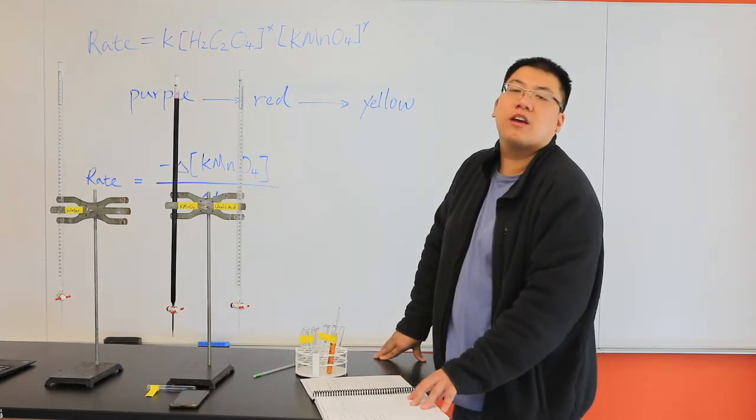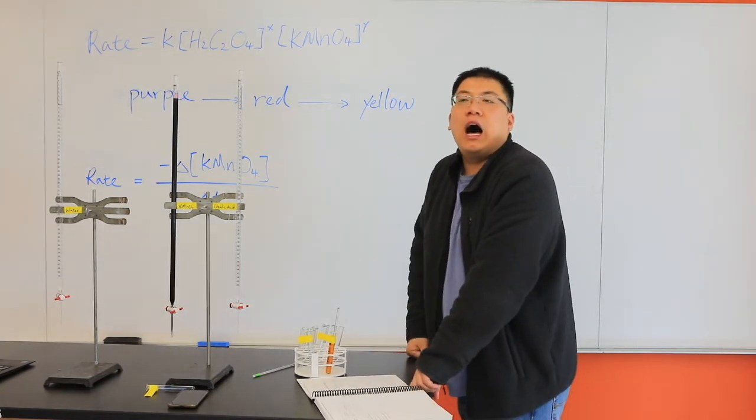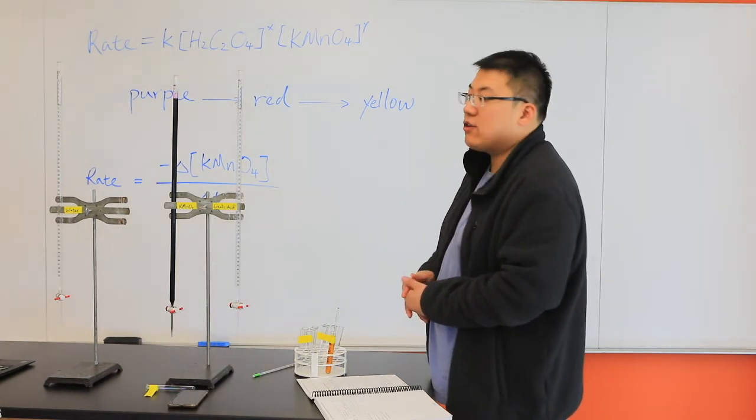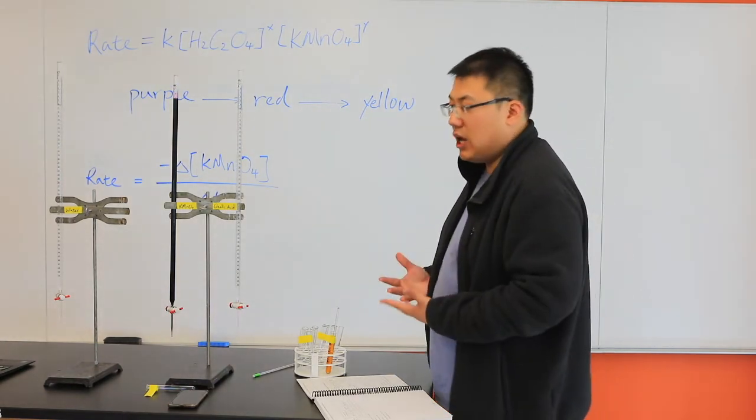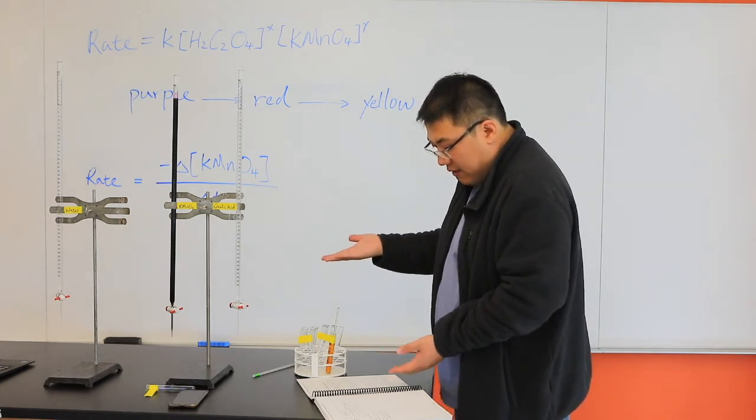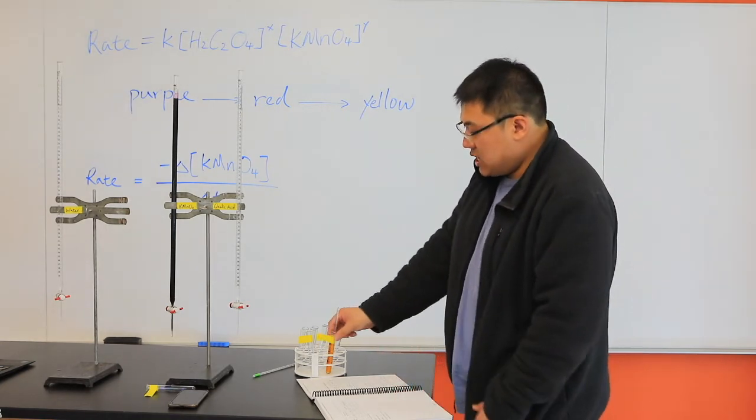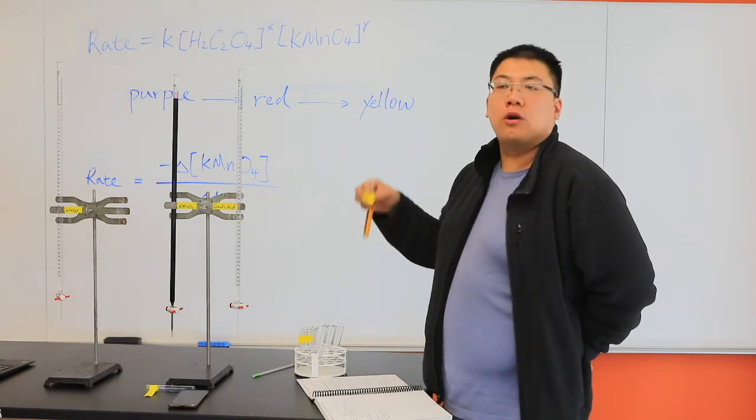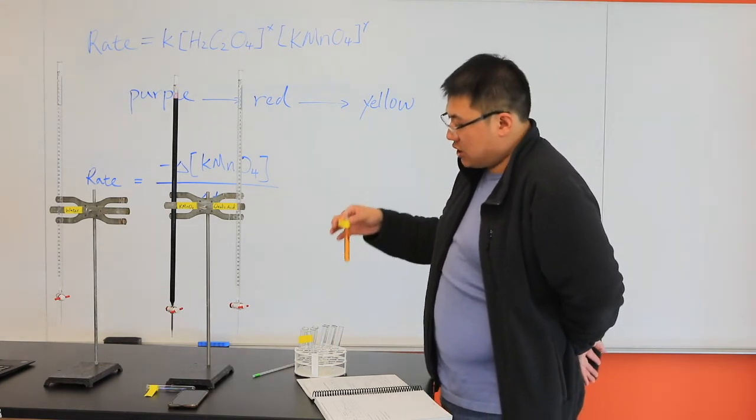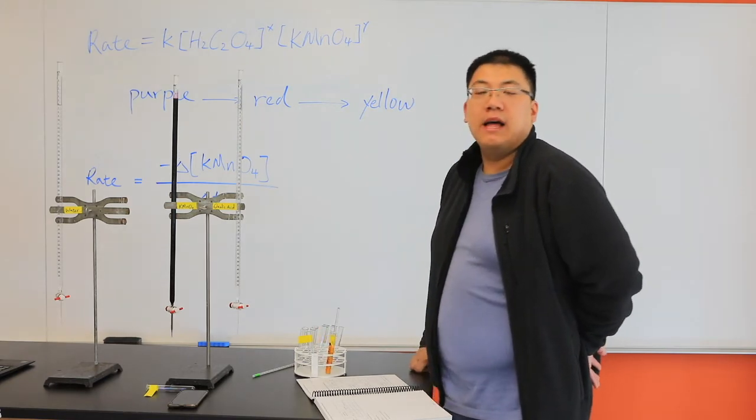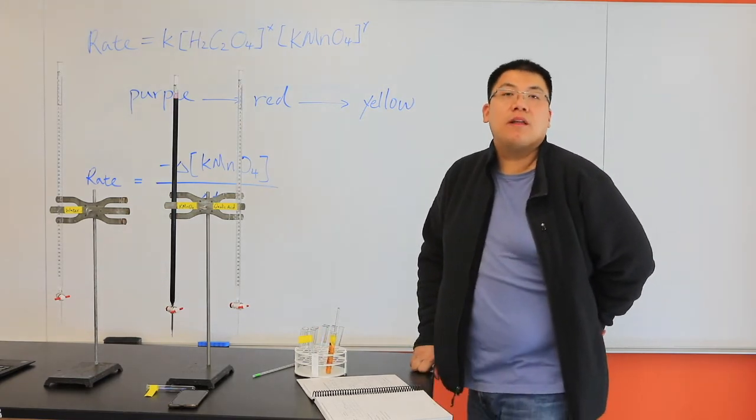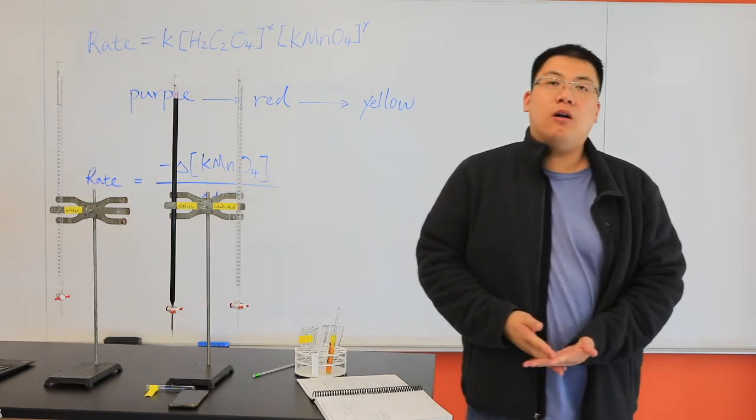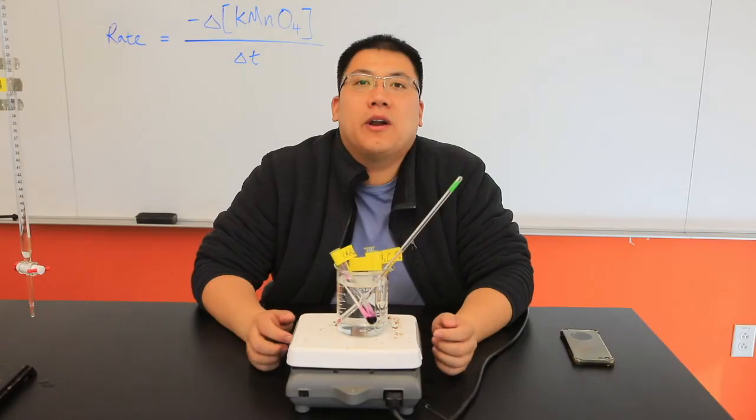The second part of the experiment is really the temperature effect. We're actually going to heat the reaction to an elevated temperature and see how long for these reactions to take place. Whether it's going to be faster or slower for each temperature increment. That will be it for this experiment. Additional experimental data will be provided by your section lab instructor.